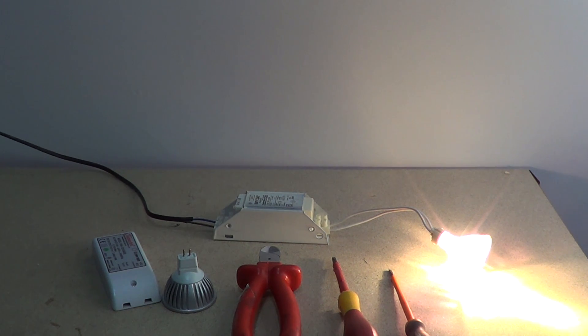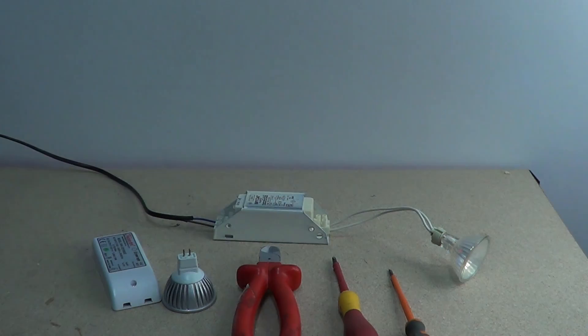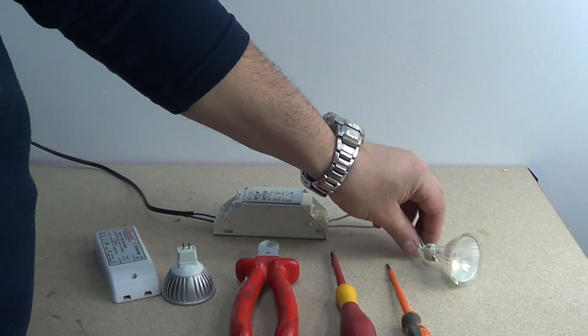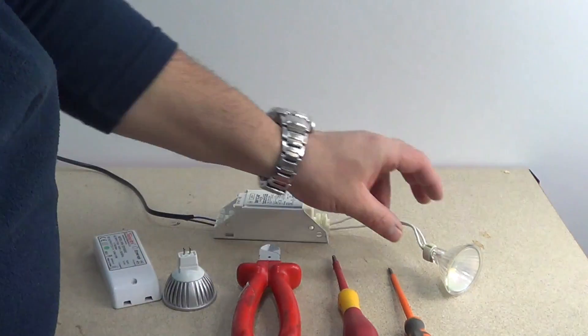The first thing you need to do is go to the fuse box and find the appropriate RCD and turn it off. Once again be careful with the bulb as halogen bulbs are extremely hot.